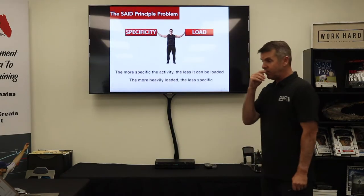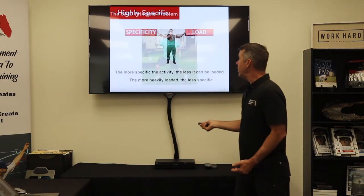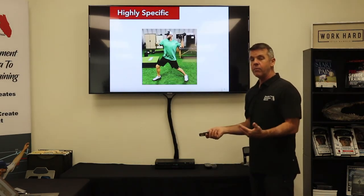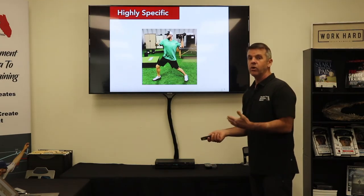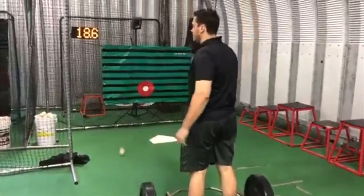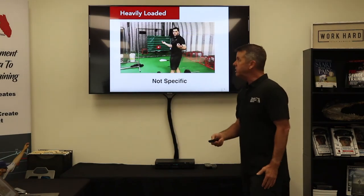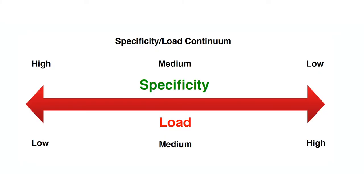That's what Savage is all about — specificity. There's this juxtaposition, this opposition of specificity and load. The more specific I make a training activity to your activity, the less I can load it. And the more heavily I load it, the less specific it will be. There's nothing more specific to throwing than throwing, but I can't put a 20-pound dumbbell in your hand today, then 30 tomorrow, then 40 the next day — that's too specific to load. On the other hand, there are lots of activities we can load heavily, but they're not specific to what we're trying to achieve. We have to manage that with the specificity and load continuum.